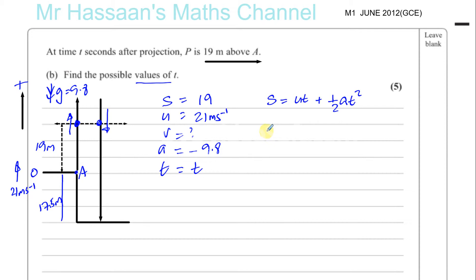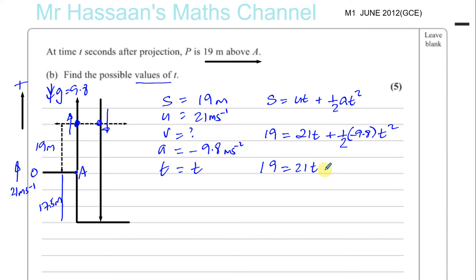Substituting in: 19 equals 21t plus one half times minus 9.8 times t squared. This gives us 19 equals 21t minus 4.9t squared — since half of 9.8 is 4.9. Bringing everything onto one side as we do with quadratics: 4.9t squared minus 21t plus 19 equals 0.